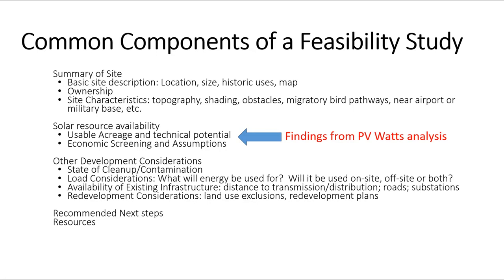It's also important to take the calculations that were performed in PV Watts and put those into the feasibility — things like how much power the PV system could potentially produce and the calculations that you ran in the spreadsheet. Those are good pieces of information to include. You should also address other general development considerations: what's the known level of contamination, is there any energy used on site, is there existing infrastructure. Any piece of information relevant to the potential implementation of a PV system on that property should go into the feasibility study write-up.